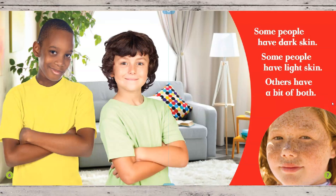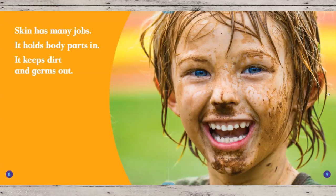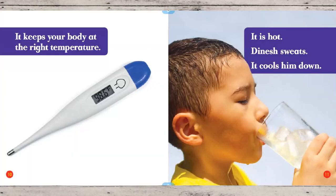Some people have dark skin, some people have light skin, others have a bit of both. Skin has many jobs: it holds our body parts in and it also keeps dirt and germs out. Skin keeps your body at the right temperature, and most people have a body temperature of 98.6 degrees Fahrenheit.